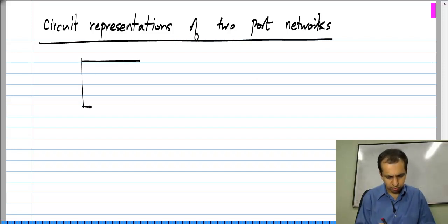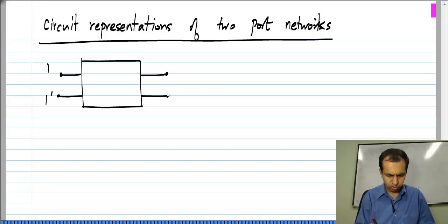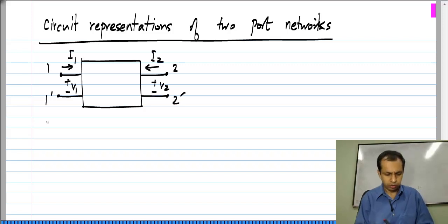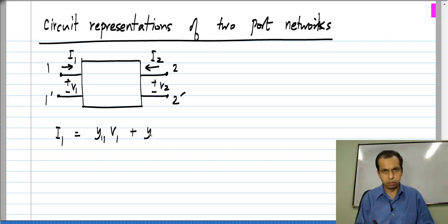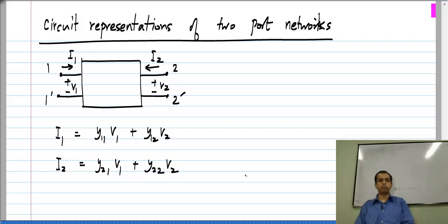Let us say we have a two-port and we choose to use Y parameters. That says that I1 is Y11·V1 plus Y12·V2, and I2 is Y21·V1 plus Y22·V2. It would be useful to have an equivalent circuit which realizes these equations.